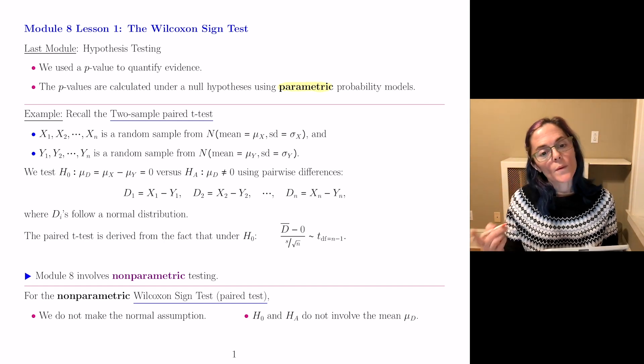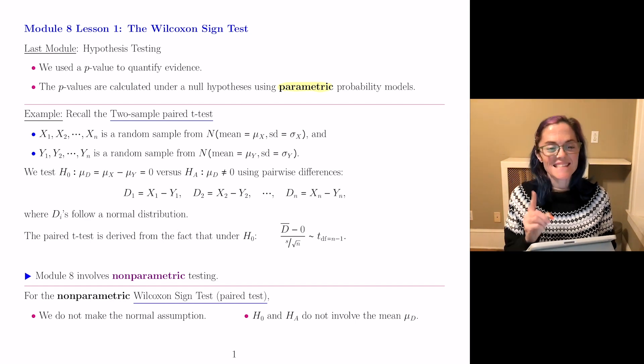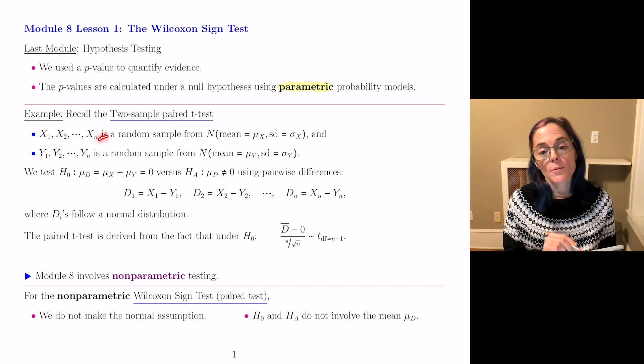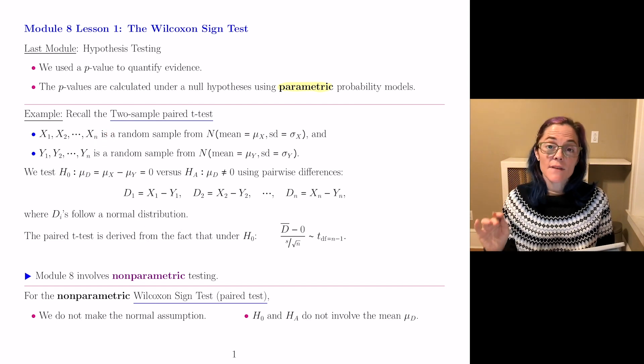As an example, we had a two-sample paired t-test. So in this setup, we have X₁ through Xₙ, random sample from the normal distribution, mean μₓ, standard deviation σₓ,